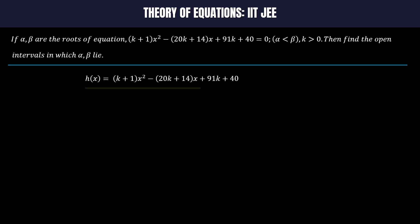Let us consider h(x) = (k+1)x² - (20k+14)x + 91k + 40.